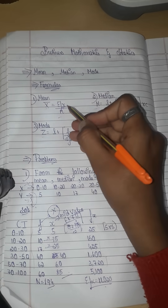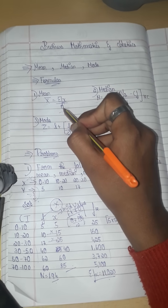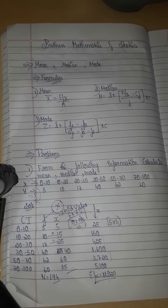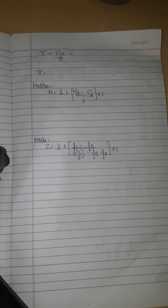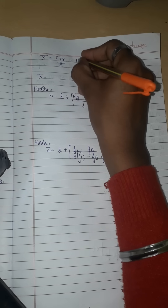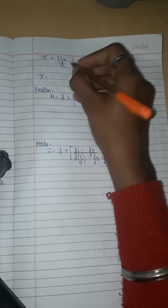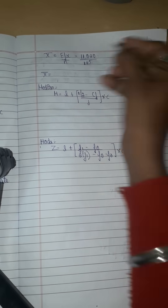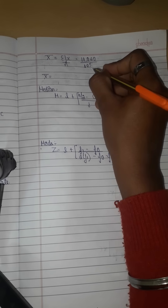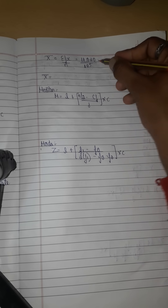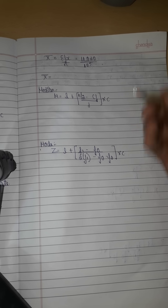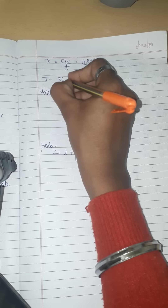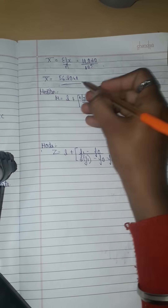We will get the mean formula: sigma fx divided by n. We substitute: total sigma fx is 11,020, and n is 195. So 11,020 divided by 195 gives the mean answer of 56.8041. This is the mean answer.